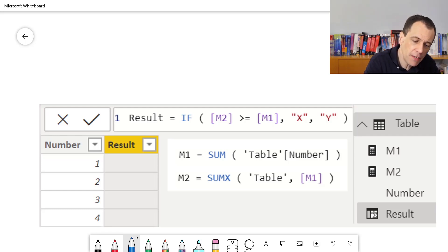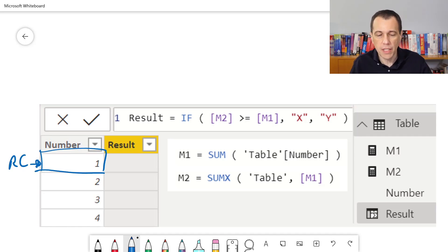Here we have, for the evaluation of this calculated column, a row context for each row of the table. The row context initially has only one column here. Result has to be evaluated as a new column. Now, what happens in the evaluation of this expression?